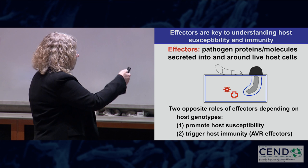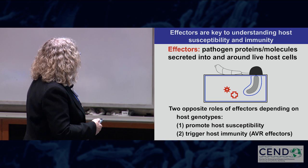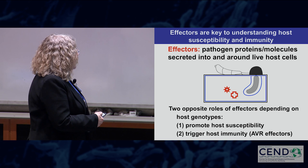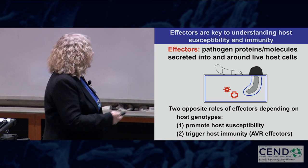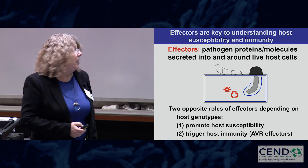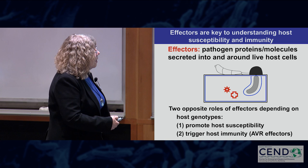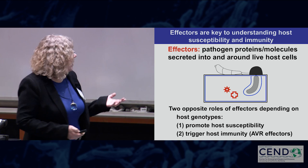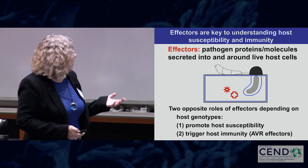Effectors are basically proteins, or molecules, produced by the pathogen and secreted into the plant, and they have two opposite roles. For the fungus, their role is to promote host susceptibility — they do the processes needed to cause disease. However, a major issue in plant disease is understanding the receptors that have evolved to recognize pathogen molecules and confer resistance. So effectors have two opposite roles: making disease happen, and also sometimes being recognized and causing their own failure.